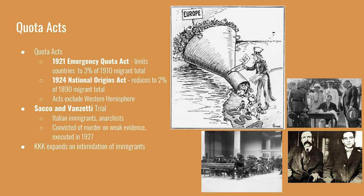By 1921, there was enough support in Congress to limit immigration. Congress passed the Emergency Quota Act, limiting countries to 3% of their total immigration from the year 1910 — so if Italy had sent 100,000 people in 1910, they could only send 3,000 in 1922. In 1924, the quota was reduced further through the National Origins Act, going down to 2% with the baseline year changed to 1890, before most southern and eastern European immigration had happened — an attempt to stop all immigration from eastern and southern Europe altogether.